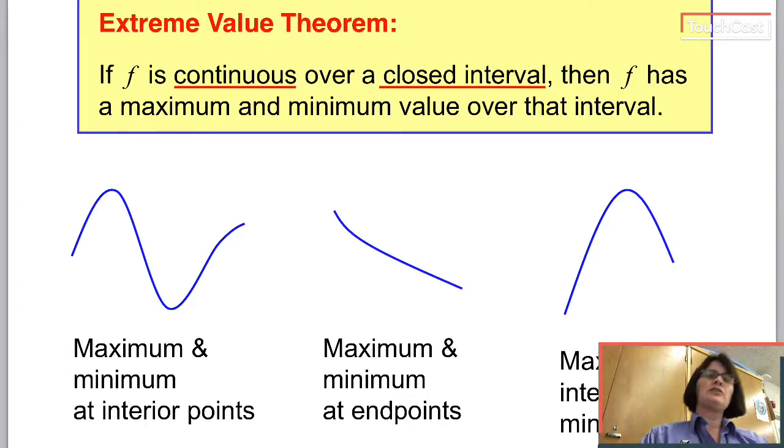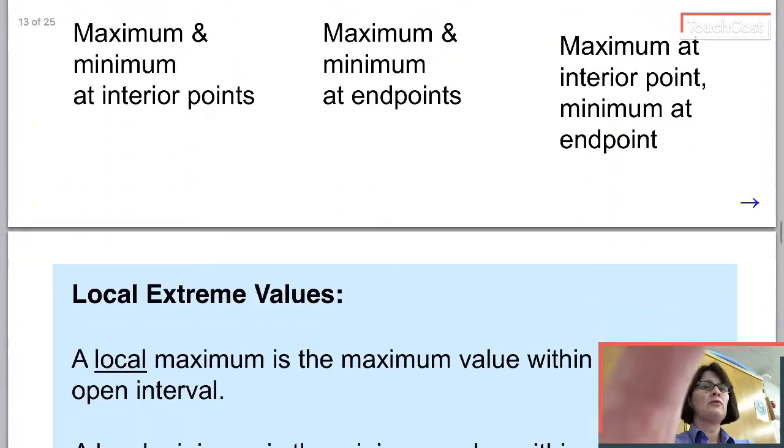So a theorem that is good to know, if a function f is continuous over a closed interval, that means I've included the endpoints and I have endpoints, then f has to have a maximum value. It has to have a minimum value. So you can see here that maximum or minimum could occur, it could happen at the interior points. Interior point is what we call something that's not an endpoint. They could be at the endpoints, or you could have the maximum at an interior point and the minimum at an endpoint. So there's no guarantee where it's going to happen, but I can guarantee you that there is a maximum value and there is a minimum value, if f is continuous over a closed interval.